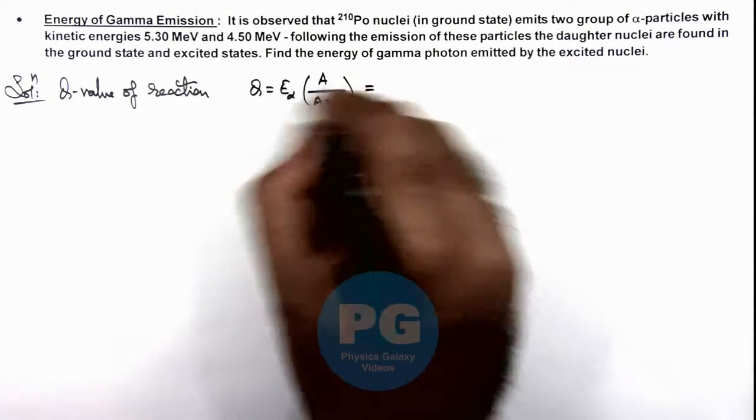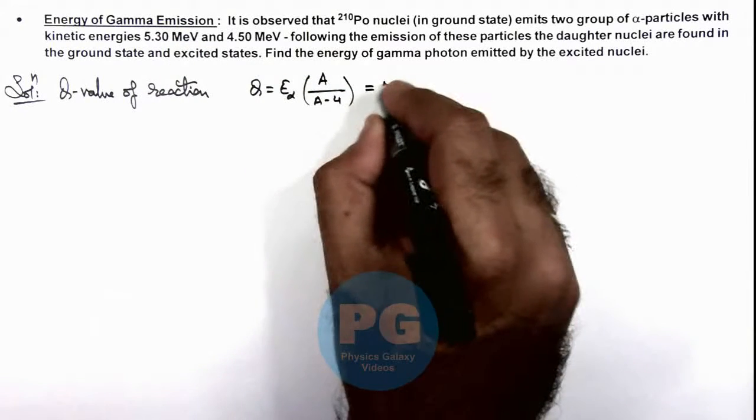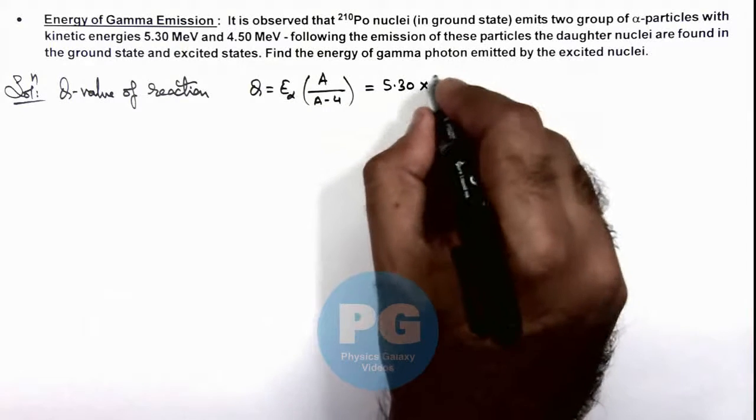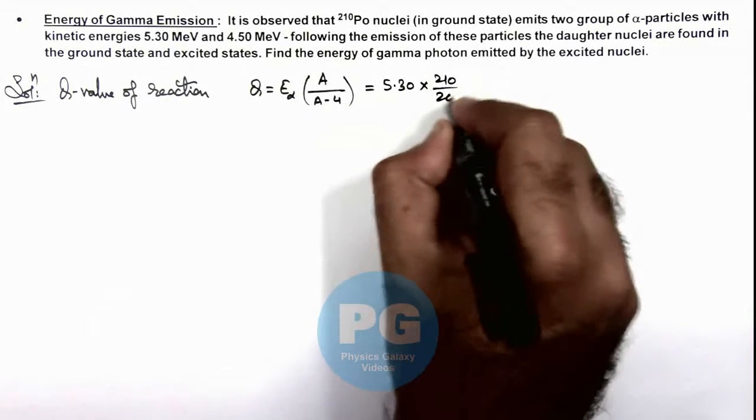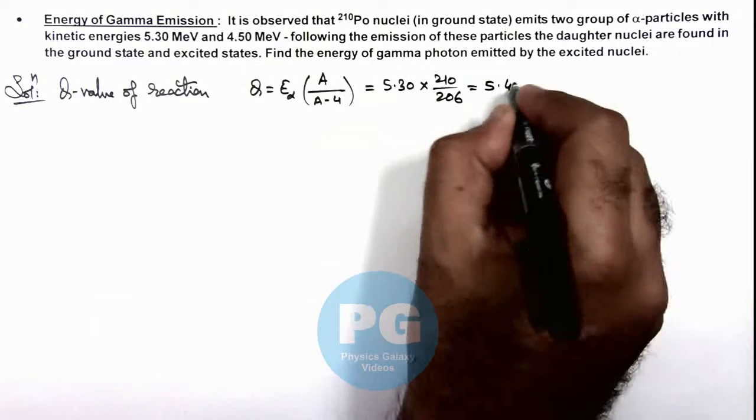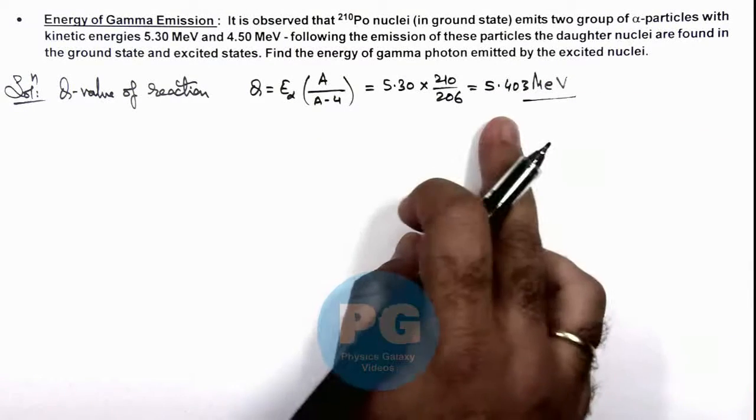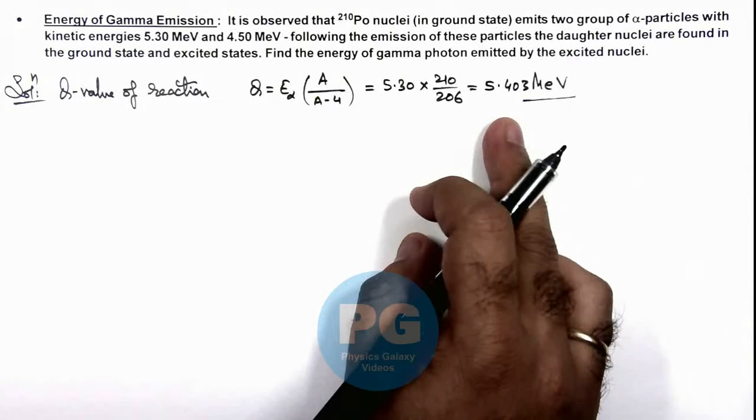When energy of emitted alpha particle is 5.30 MeV, we multiply it by 210/206, which gives us 5.403 MeV. This is the total energy evolved when no gamma emission takes place.